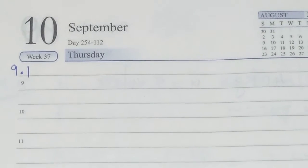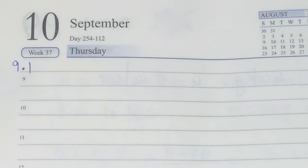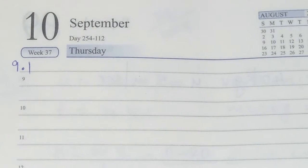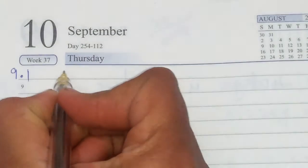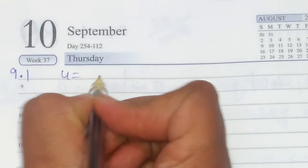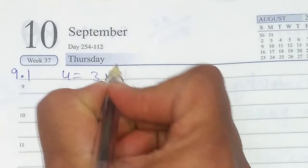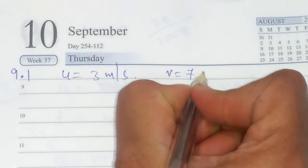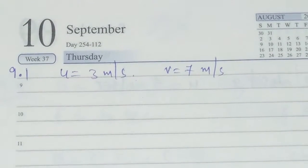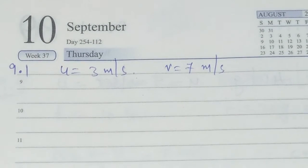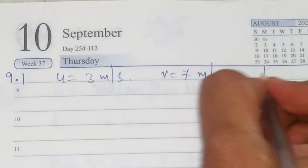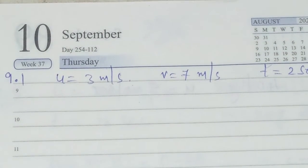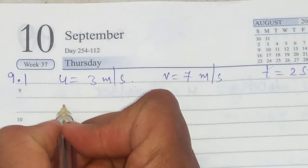Let us see the solution for this question. Here in this question, they have given both initial velocity and final velocity. Initial velocity is given as 3 meters per second and final velocity is given as 7 meters per second. Time is also given, so we take it as 2 seconds. From these values, let us find out what is acceleration.